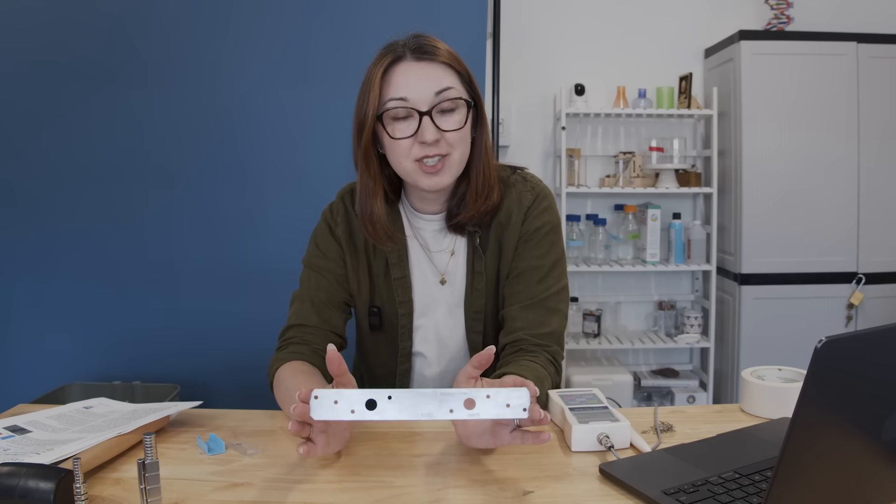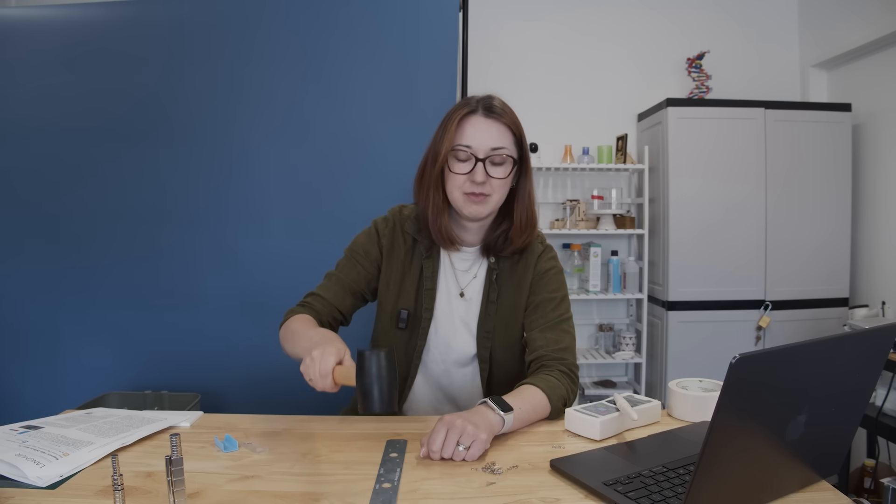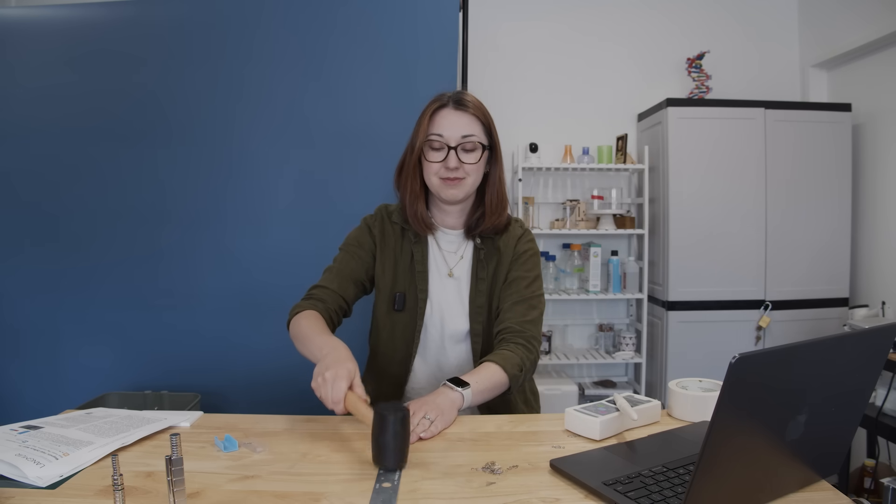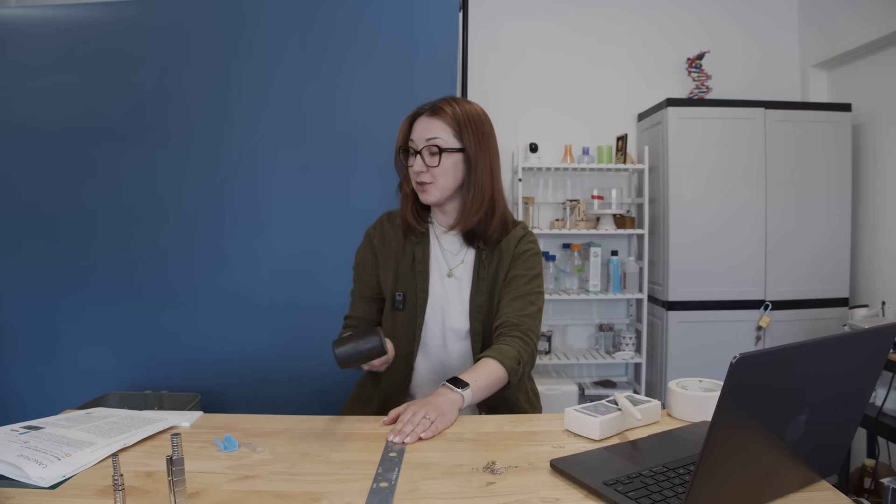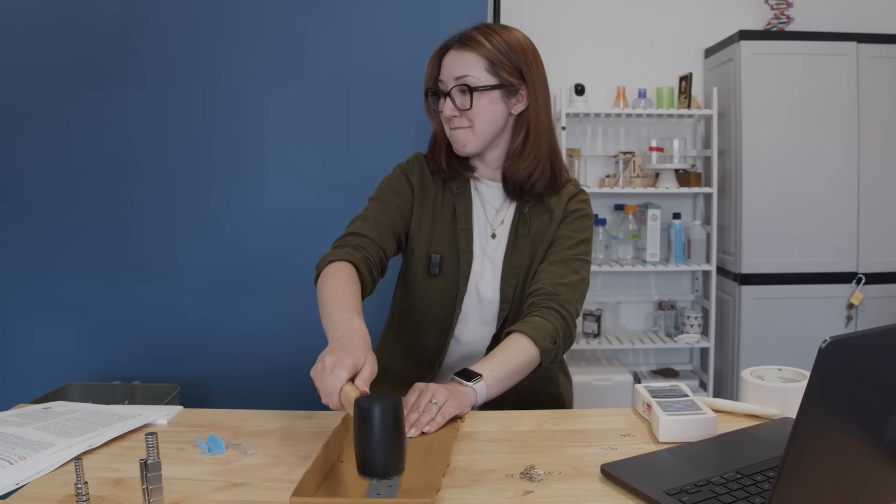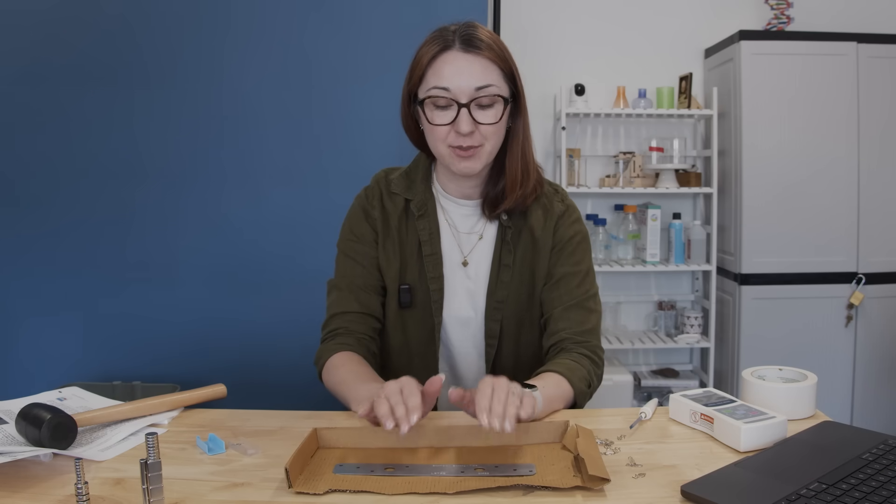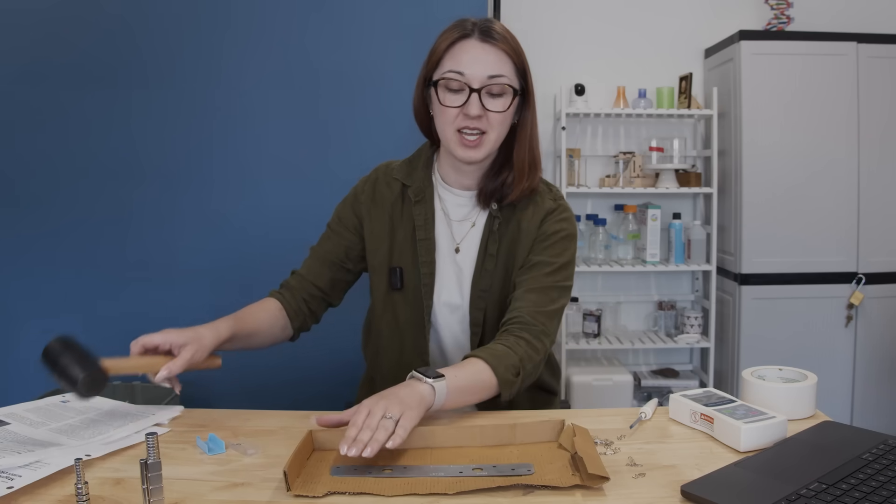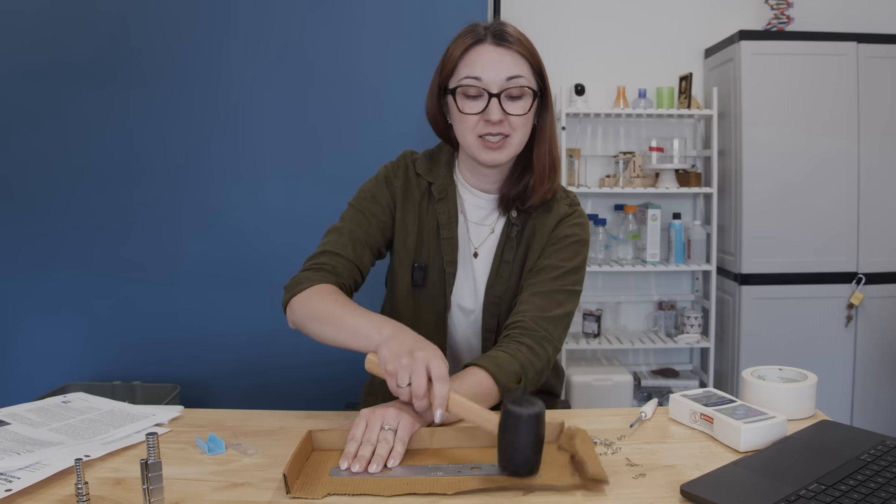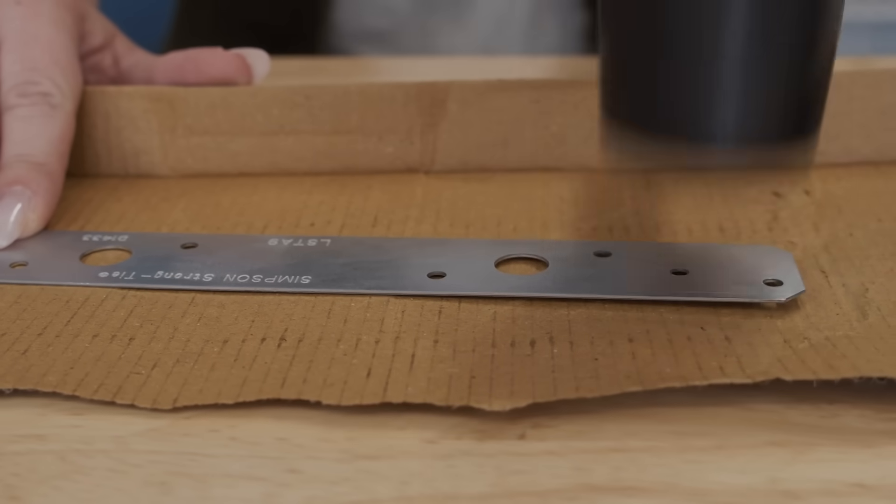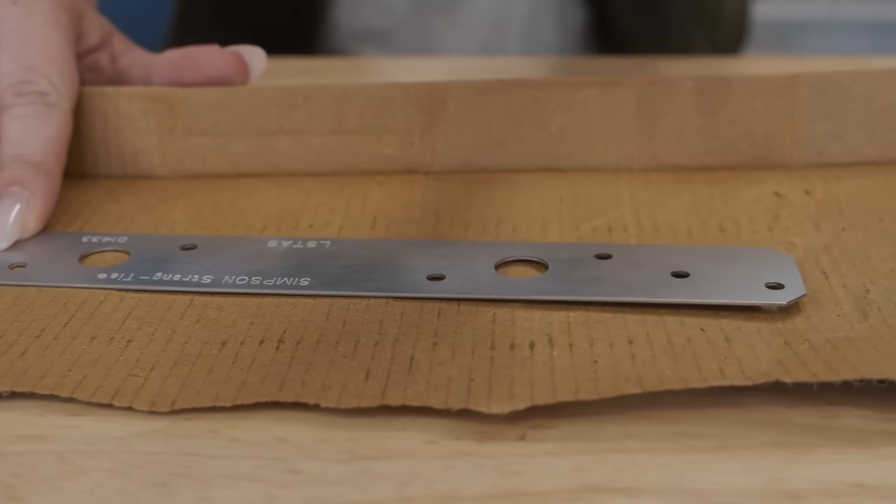You can also align magnetic fields in a material by whacking it with a hammer. So it works best if you hold your piece of iron containing metal in a north to south configuration and then just bap it on the south end. And I'm physically shaking those electron spins into alignment right now.